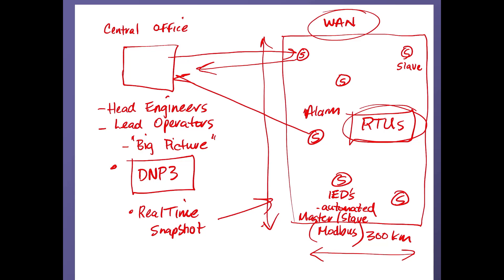Back when this first started, all utilities would have to pay for expensive data connections to each one of these sites. How much they used them and how they leveraged the available bandwidth was really important. The head engineers or lead operators wanted to have a real-time snapshot of what was going on in the field, so the efficiency of the communications protocol was of utmost importance. That's where the true SCADA protocol came in as a solution — it was very efficient with its use of those data connections.